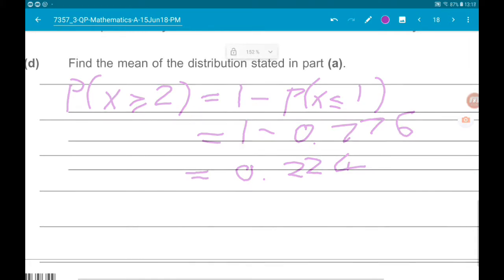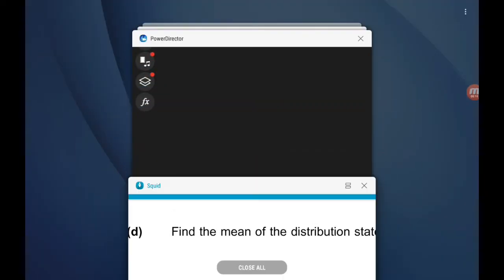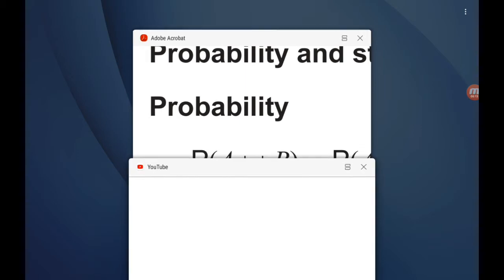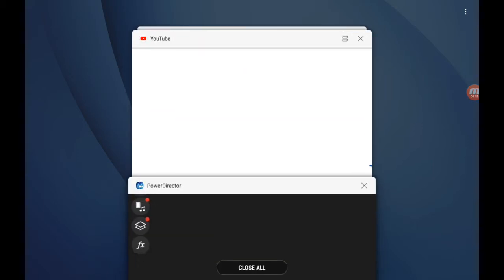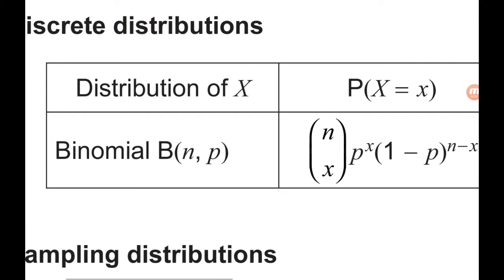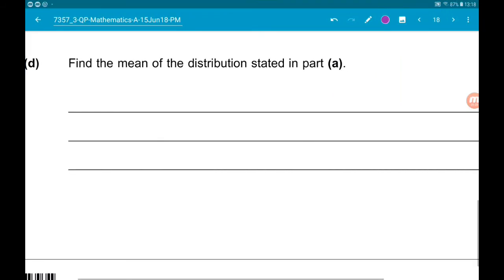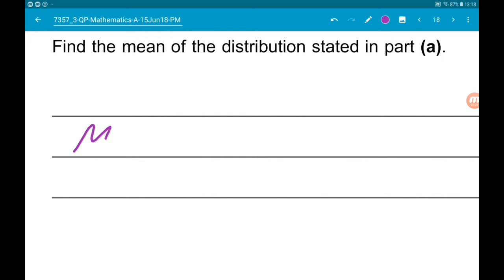Cool. Now part D, for one mark, wants us to find the mean of the distribution stated in part A. So I believe we're given this. Let's have a look. So there we go. Binomial distribution has a mean of N times P. So the mean is 6 times 0.15, which is 0.9.